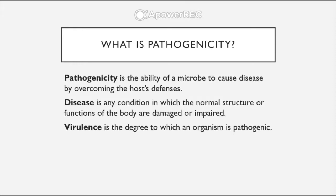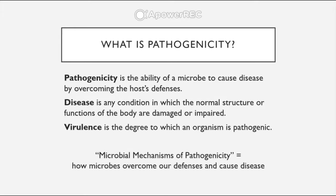So if we apply these terms to the chapter heading 'microbial mechanisms of pathogenicity,' we're studying how microbes overcome our defenses and cause disease. For example, coronavirus could have pathogenicity in humans while Lactobacillus acidophilus, which is used to culture yogurt, would not. We can also use an example for virulence: Ebola virus has a high virulence while Candida albicans has a low virulence.